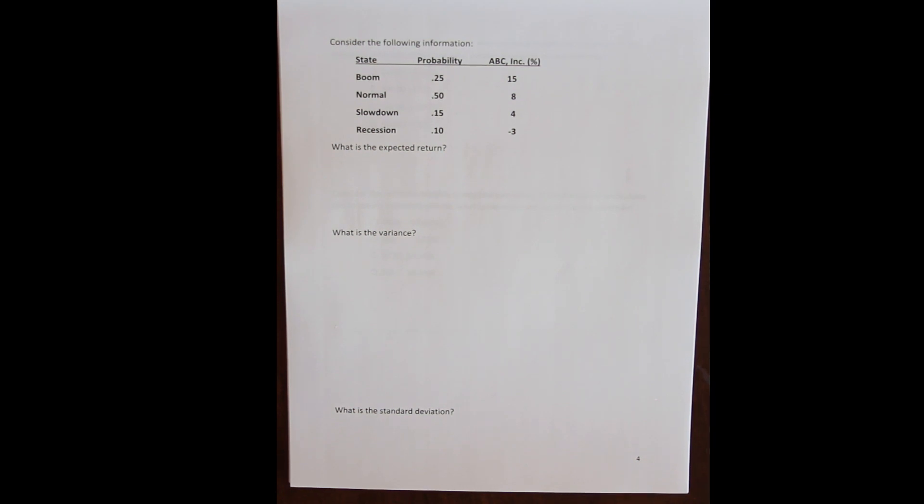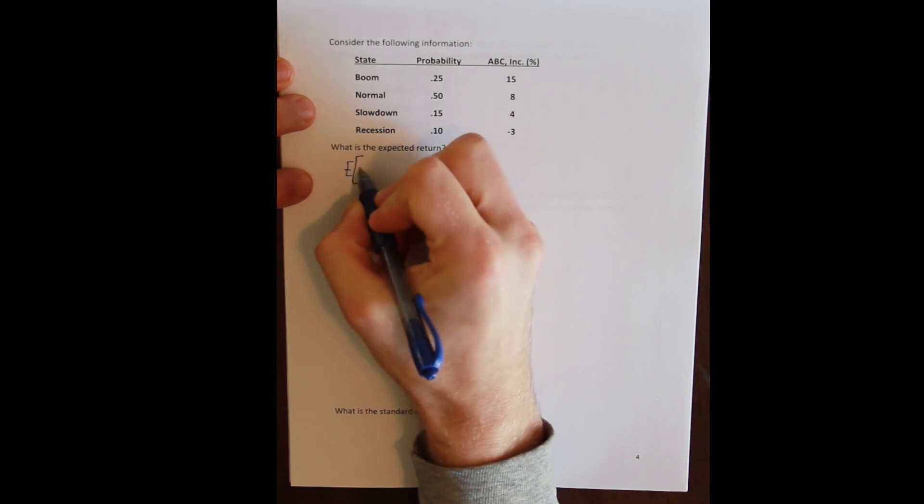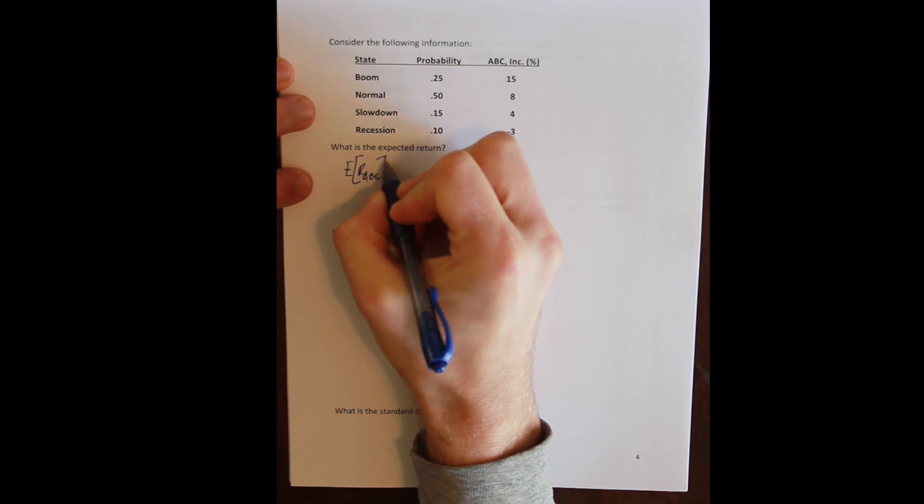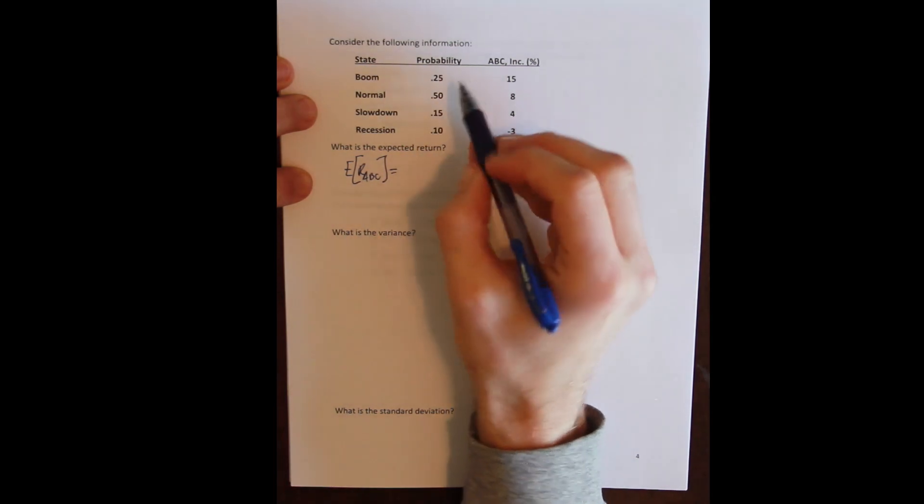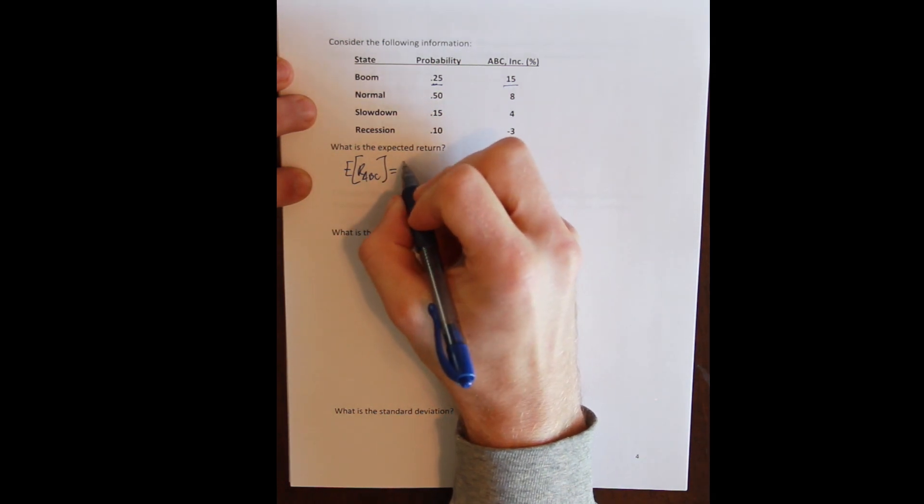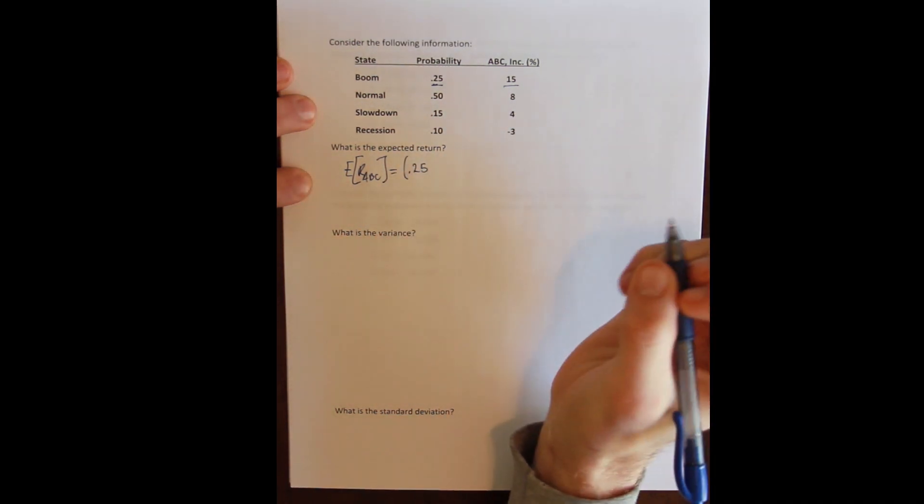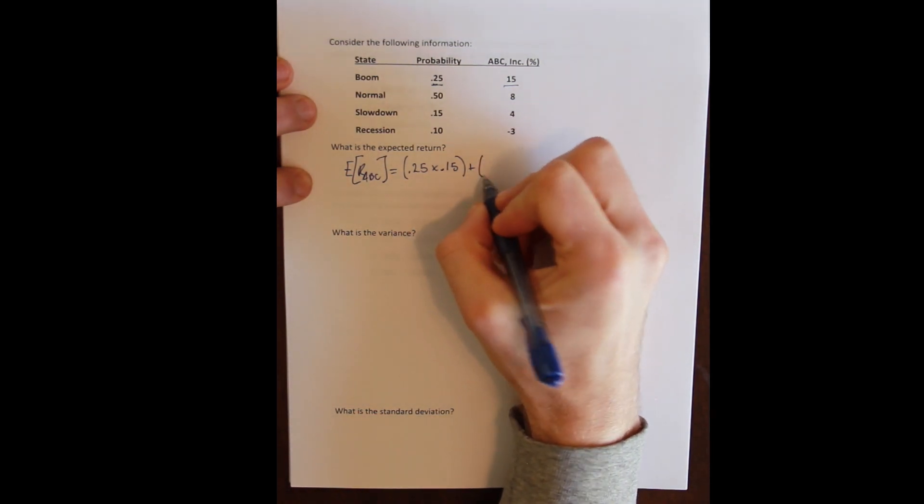This time I'm not going to expand the term, I'm just going to assume that we all can follow along. So we want the expected return of stock ABC, and the expected return is the probability weighted actual return, which means we multiply each of the probabilities times each of the actual returns. We'll start with the boom state which occurs with a probability of 25 percent and has an actual return for ABC of 15 percent, plus the normal state which occurs with a 50 percent probability and has an 8 percent actual return.